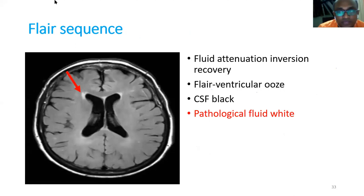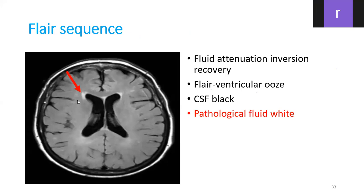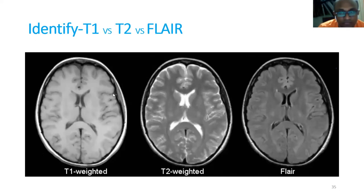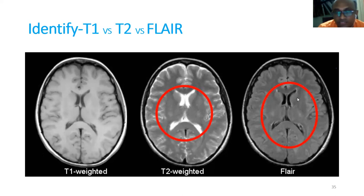FLAIR sequence: you can identify FLAIR by the periventricular ooze — you can see the edges of the ventricles lit up. In T2, both CSF and pathological fluid are white. But in FLAIR sequence, the CSF is black and pathological fluid is white. Summary for identification: CSF is black in T1 weighted, CSF is white in T2 weighted, and if there is periventricular ooze with bright edges of the ventricles, it is a FLAIR sequence.